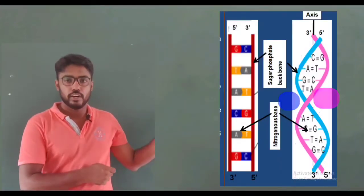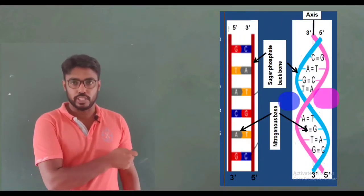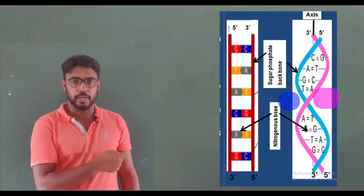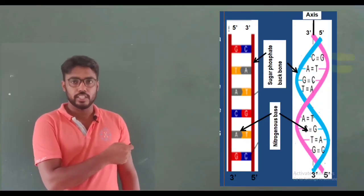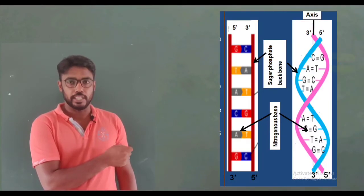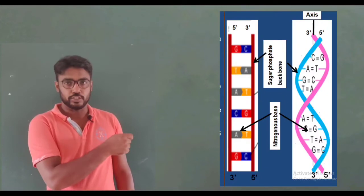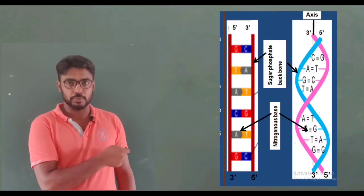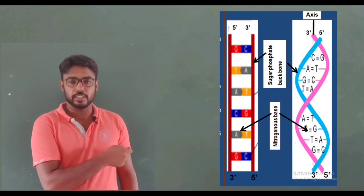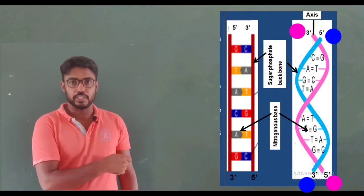In this figure, you can see the two strands that are helically wound around each other. You can also see the complementary base pairing where A binds only with T and G binds only with C. You can see the sugar-phosphate backbone, the transverse bars formed by the base pairs, and the anti-parallel arrangement of the two strands.